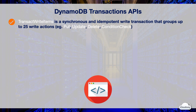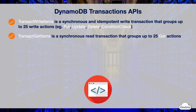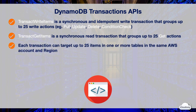TransactGetItems is a synchronous read transaction that can group up to 25 get actions together. Each get action initiates a GetItem operation to retrieve a set of attributes for the item with the given primary key. If no matching item is found, the get action doesn't return any data.